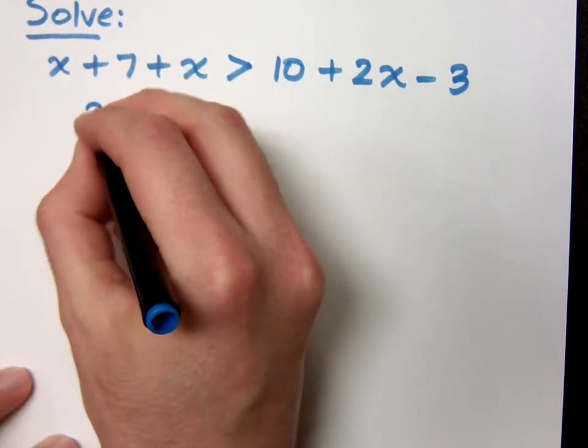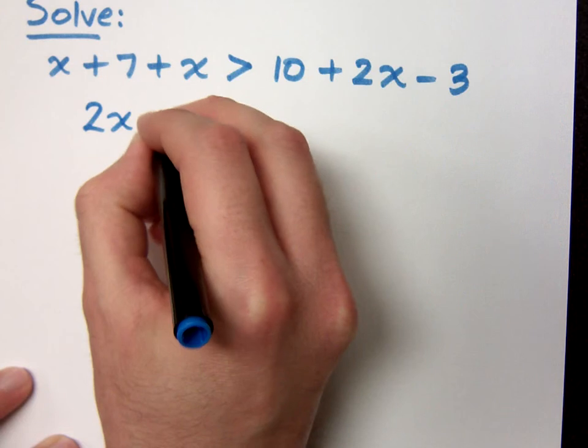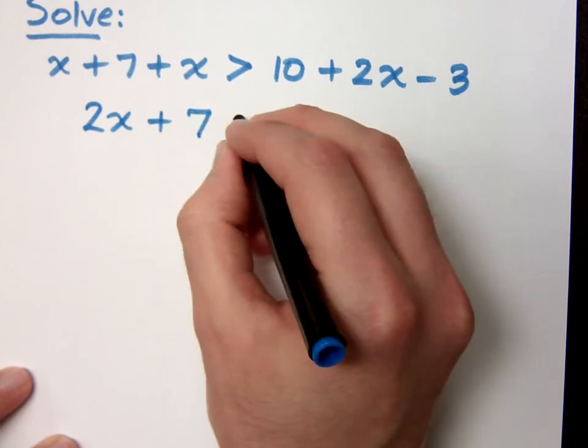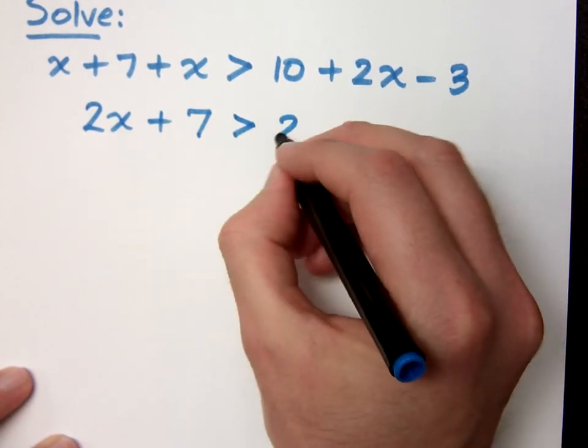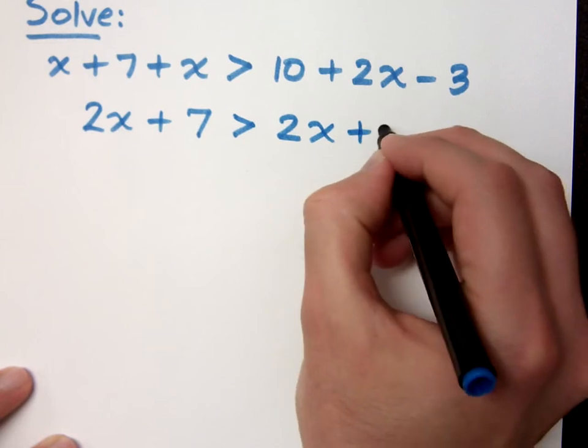When I do that, combine like terms, I get 2x plus 7 on the left, and on the right side, I get 2x plus 7.